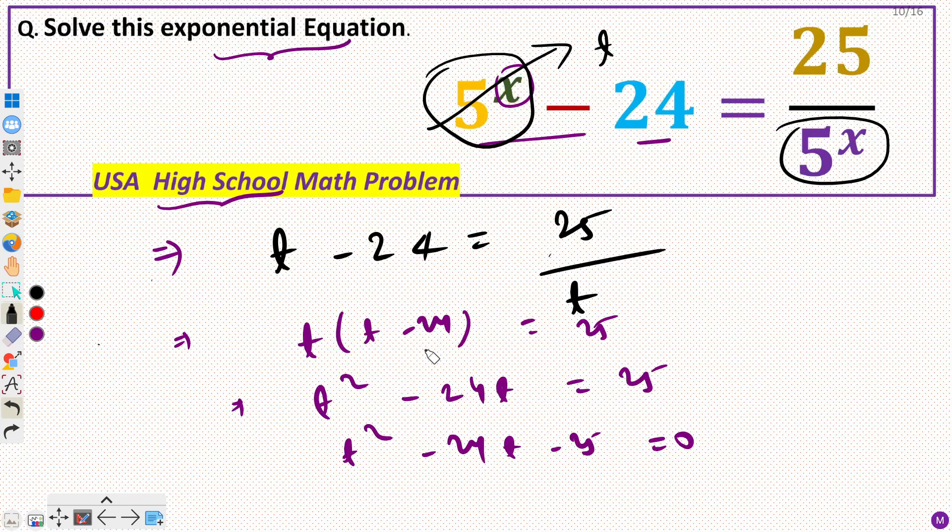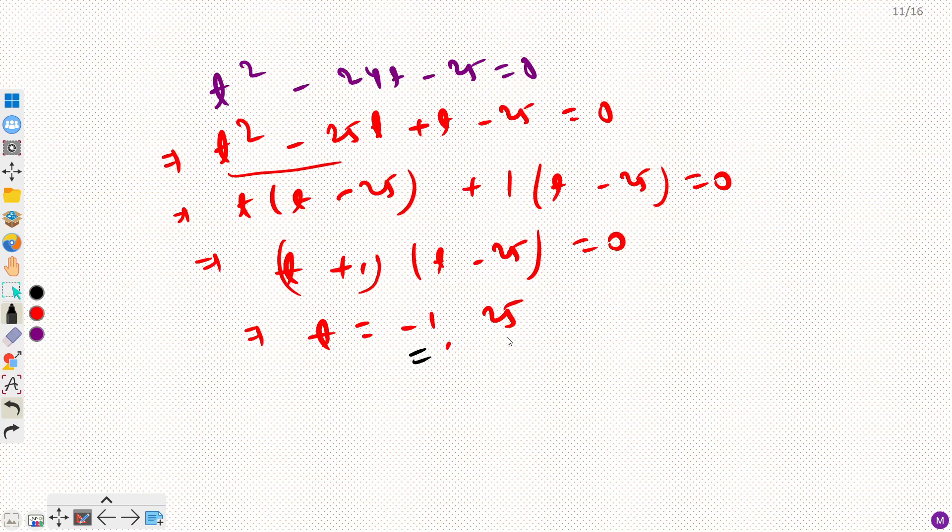Now this is not my answer. We have assumed 5 raised power x equals t. So these two values are for 5 raised power x. So we have got 5 raised power x equals minus 1 and 5 raised power x equals 25.